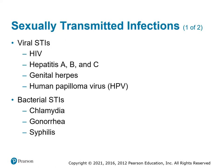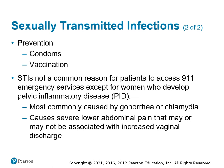STIs — we're no longer calling them STDs. Look into the different causes and reasons there are different STIs, including viral and bacterial. STIs include viral STIs and bacterial STIs. Prevention includes condoms, vaccination, and safe sex. STIs are not a common reason for patients to access 911 — most of the time they can go to a primary care or healthcare provider. Emergency services will encounter women who develop pelvic inflammatory disease, most commonly caused by gonorrhea or chlamydia, which causes severe lower abdominal pain that may or may not be associated with increased vaginal discharge.